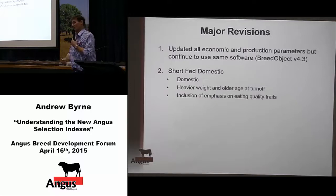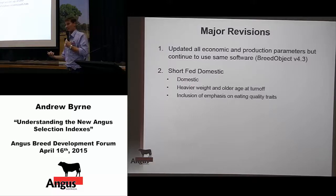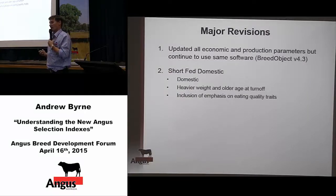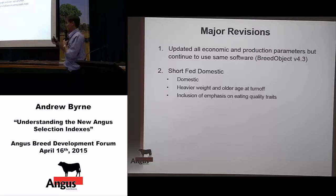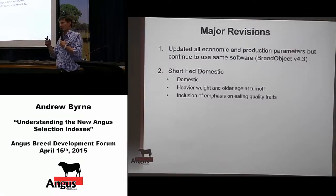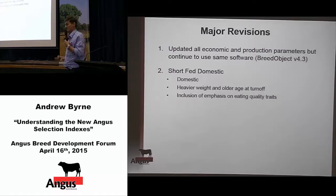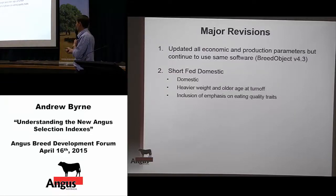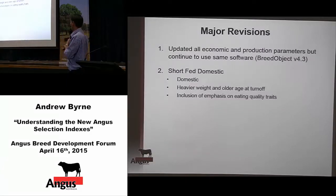The Short-Fed Domestic Index has been replaced by the Domestic Index. The reason for that change is we were getting feedback that there wasn't necessarily a short-fed system as such. The Domestic Index is now designed for people finishing off grass, finishing with a short 50–70 day grain period, or a grain-assist paddock period — the same index trying to cope with all production systems in that domestic market. It was also moved to a slightly heavier weight: the existing Short-Fed Index was 245 kilo carcass weight, now moved up to 270 kilos, and from 15 to 16 months turn-off.